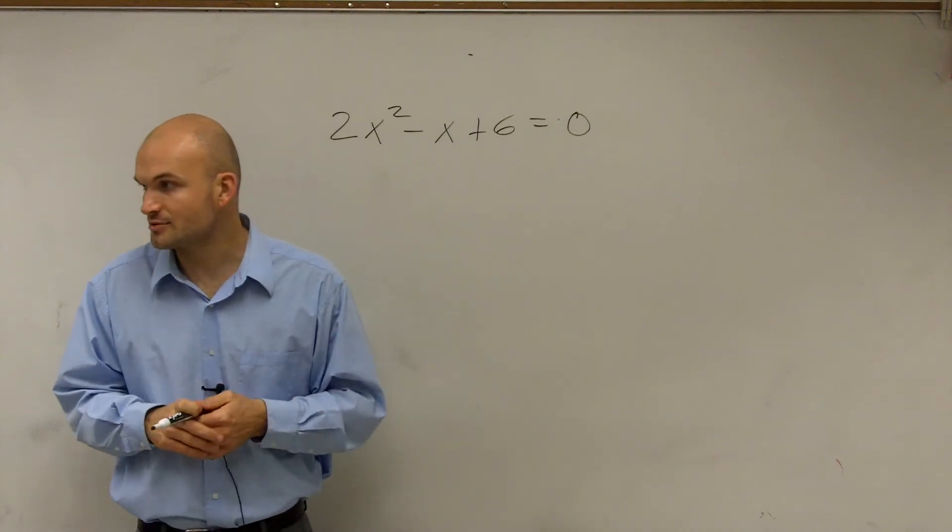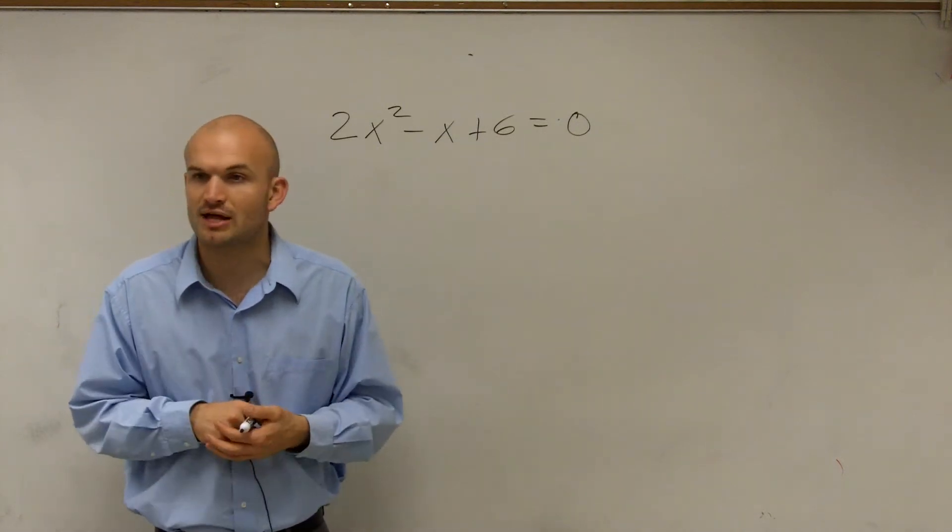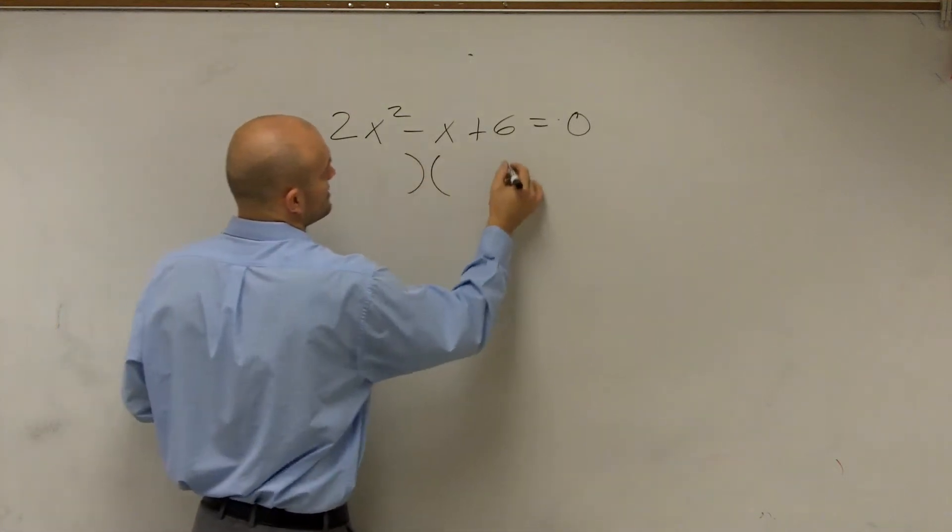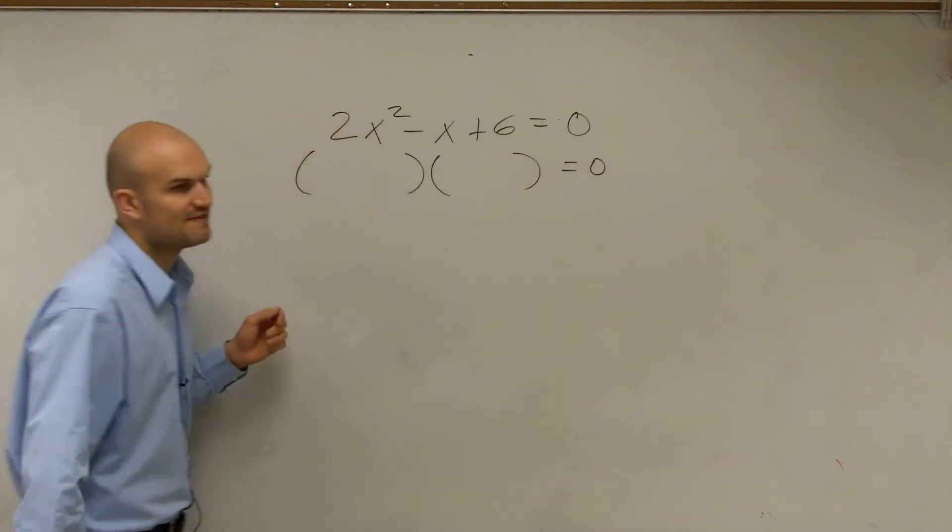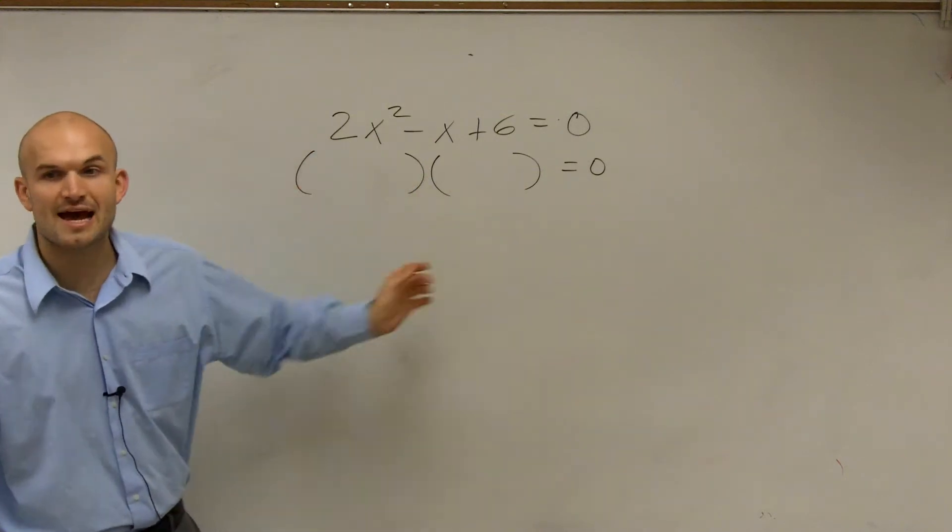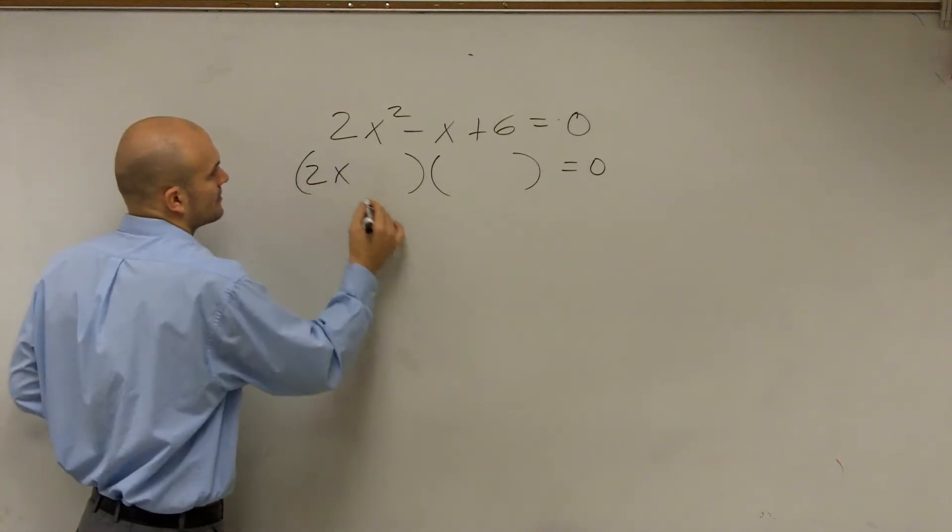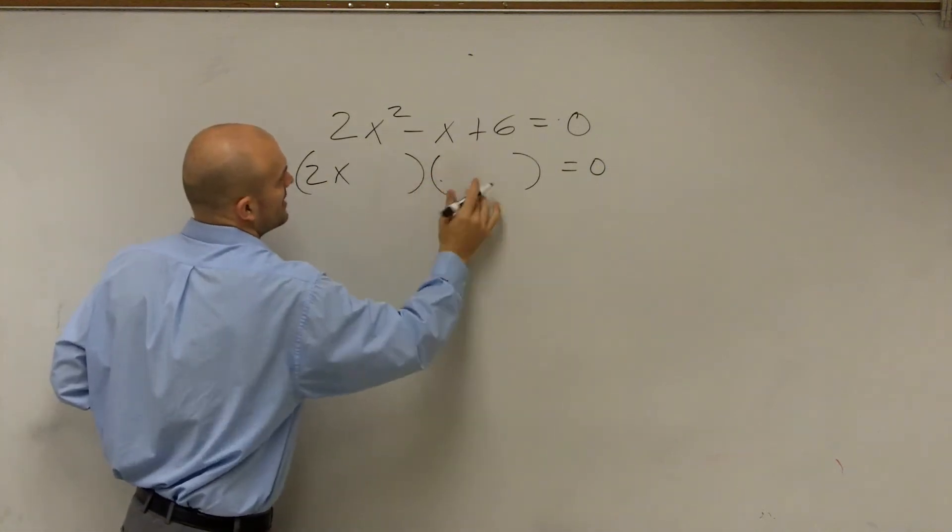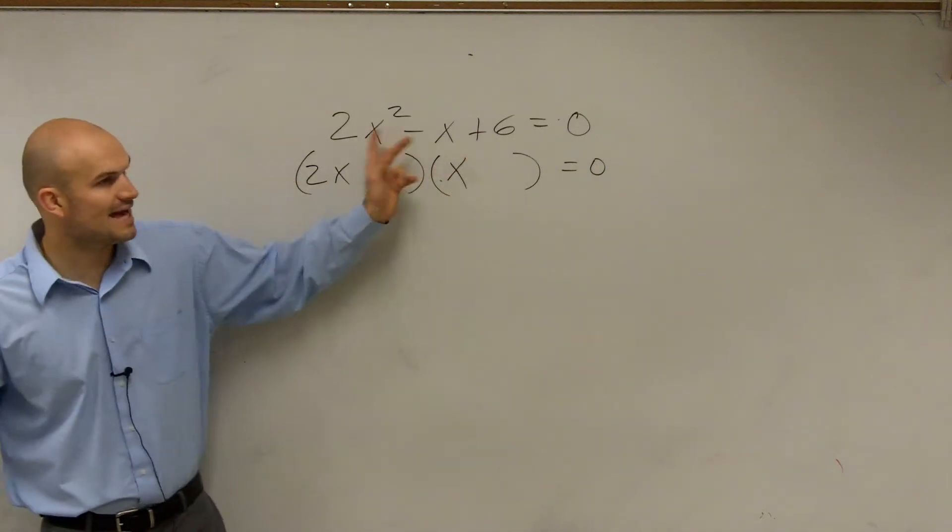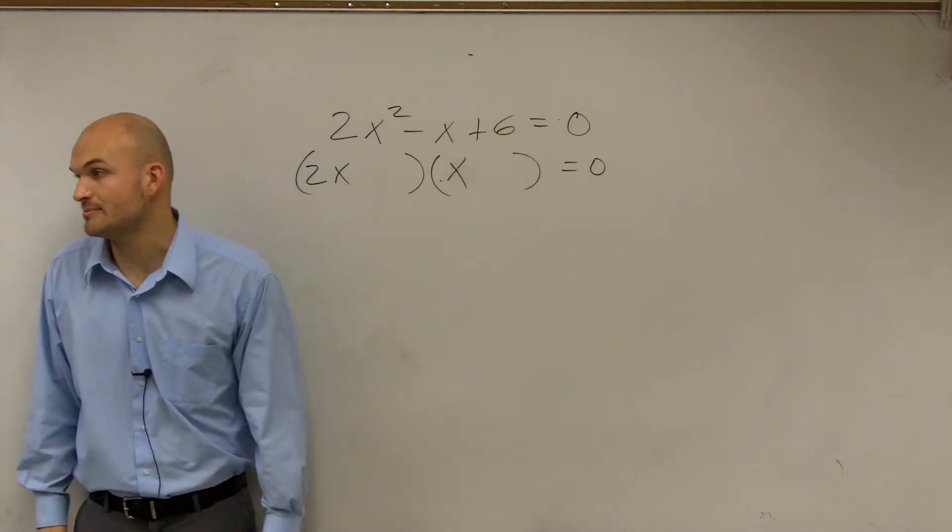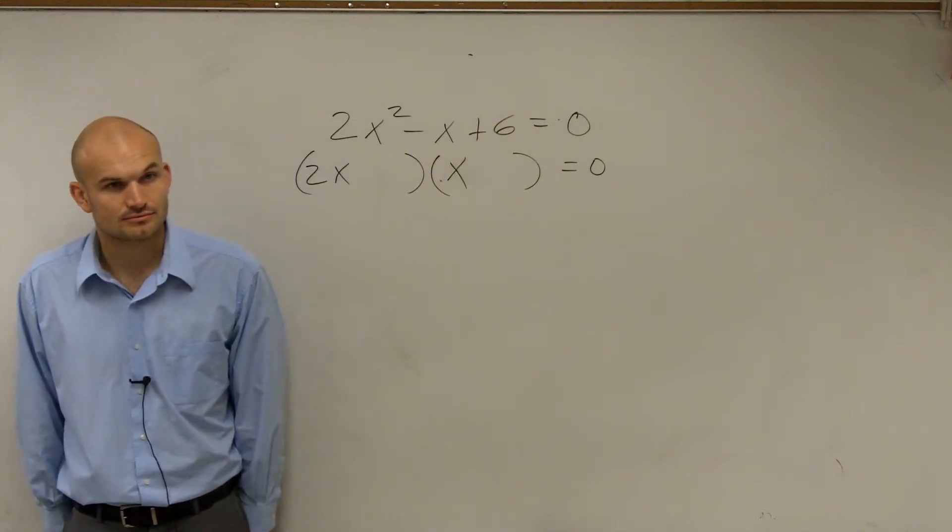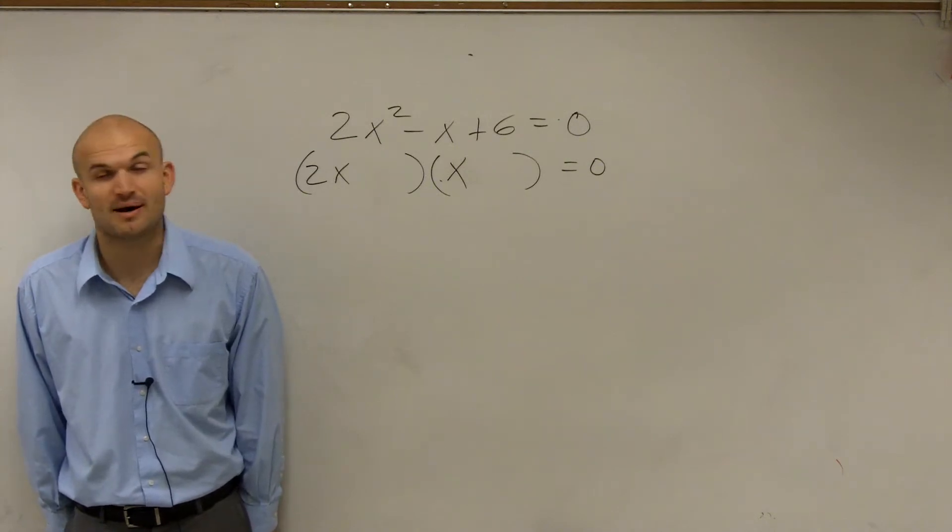Factoring, if it's factorable, is usually the quicker method as long as you have practice with the factoring technique. So there's two ways you can do it. You can immediately look at this as two factors and see if it's factorable. We know my first two terms have to multiply to give me 2x². That one just has to be x. Then we know my last two numbers have to multiply to give me positive 6.